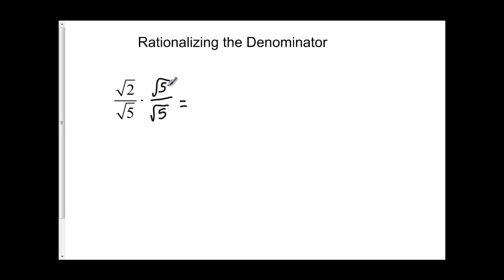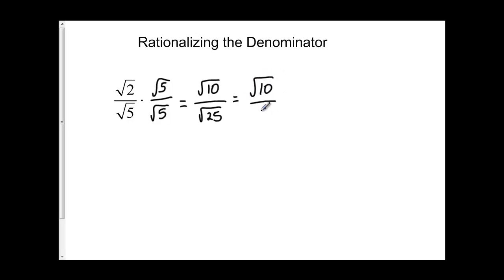So when I multiply, I've got the square root of 2 times the square root of 5, which is going to give me the square root of 10. On the bottom, the square root of 5 times the square root of 5 gives me the square root of 25, which is 5. So my new answer is root 10 over 5. It's an equivalent form of root 2 over root 5, but this one doesn't have a radical in the denominator, so mathematically it's a little bit easier to work with.